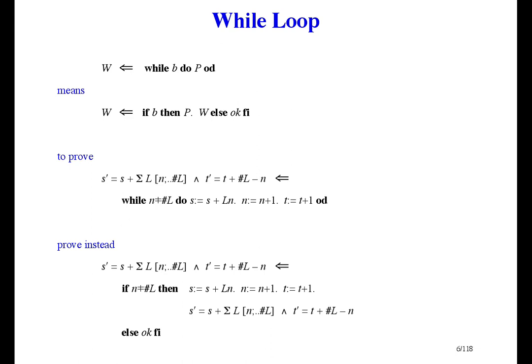The final time is the time so far plus the distance to the end of the list. To prove this refinement, we instead prove this refinement in the usual way. And that's all a programmer needs to know about while loops. There is another way to define the while loop construct, and we'll meet it in Chapter 6.